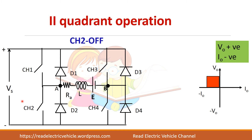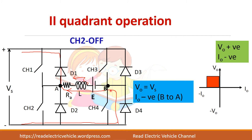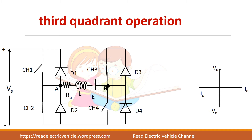When CH2 is switched off, current starts to flow through diode D1 and returns back to the supply. Now point A is connected to positive, so output voltage is positive; current is from B to A, so I0 is negative.